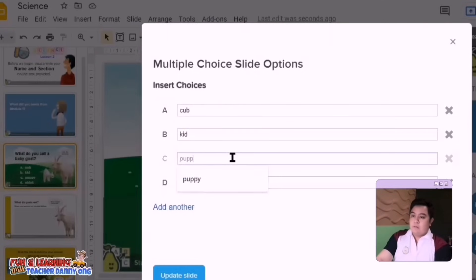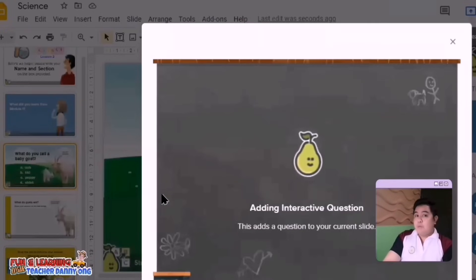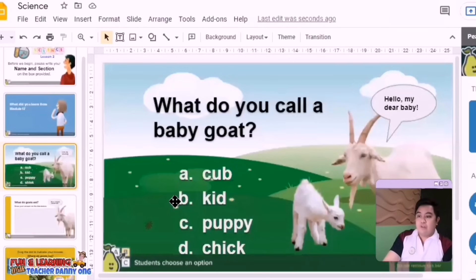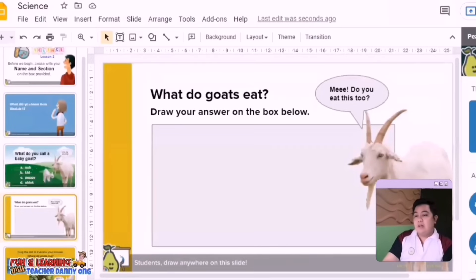A for cub, B for kid, C pop, and D chick in the options. Now if you have premium account, you can let your student draw and try the drag and drop functions. Now here are sample slides prepared for our science class.